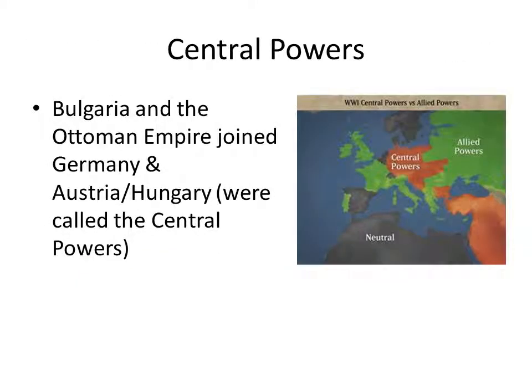The central powers — who we call the bad guys or the other side — were Germany, Austria-Hungary, Bulgaria, and the Ottoman Empire. England, France, Italy, and Russia were called the Allied powers.